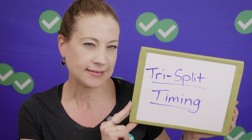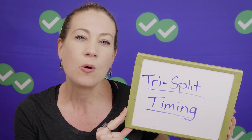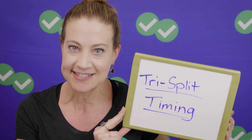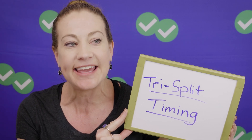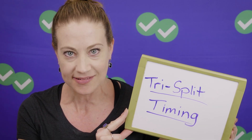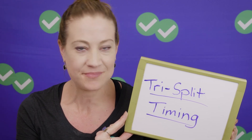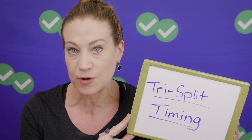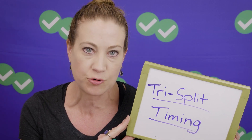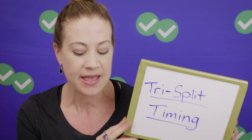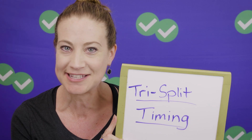The last tip is what I call tri-split timing. On the ACT you have 60 questions to answer in 60 minutes, but the question layout gets harder as you go on. The first third of the test is fairly easy, the middle is medium difficulty, and the last third is where your challenging questions are. We recommend spending different amounts of time on different portions of the math section. I'm going to show you two different versions of how you might tri-split your time.